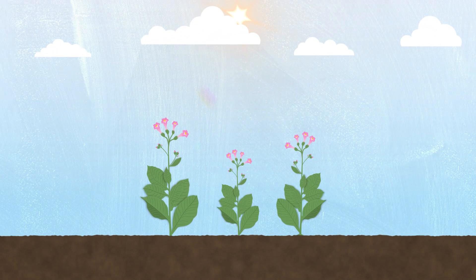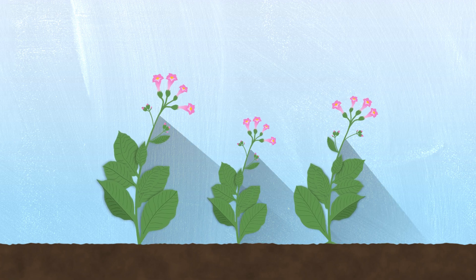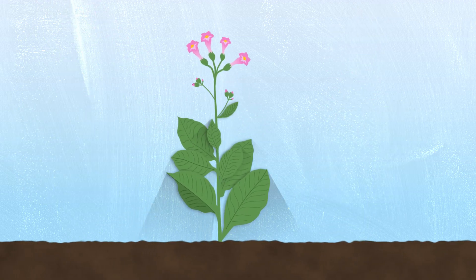Where does all this variation in light come from anyway? From clouds passing over the Sun, from wind blowing leaves around casting moving shadows from other plants, even their own leaves.